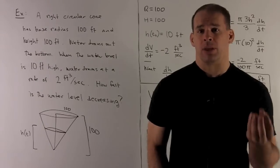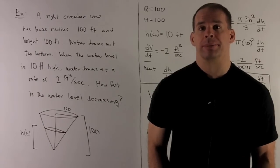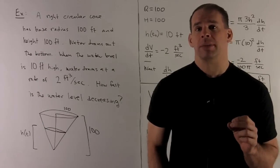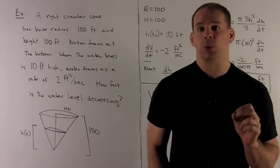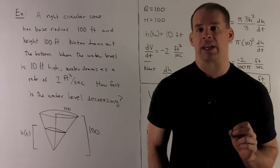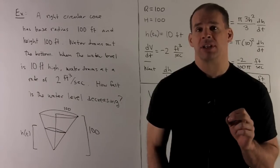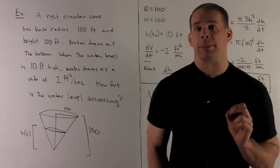Cone is filled with water and the water is going to drain out of the tip. When the water level is 10 feet high, water is going to drain out at a rate of 2 feet cubed per second. How fast is the water level dropping?